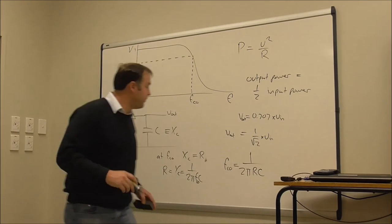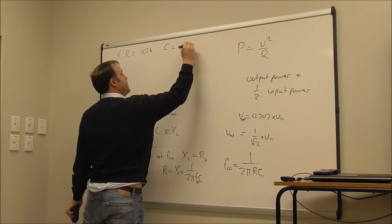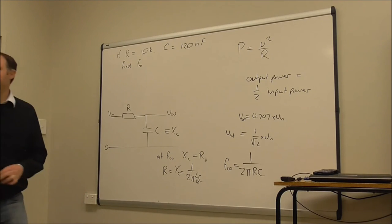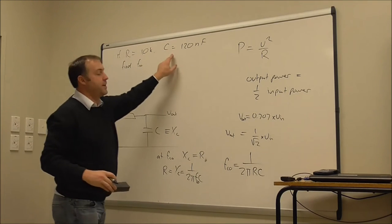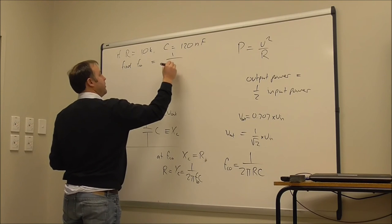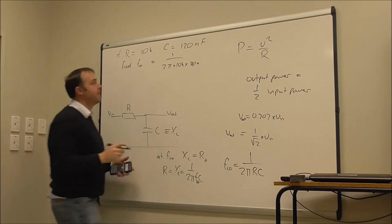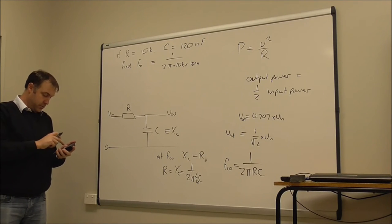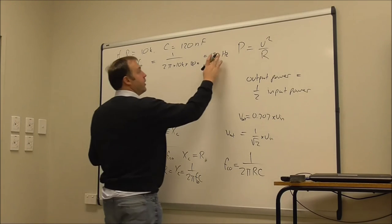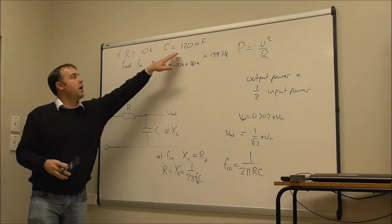Let's do an example. If R equals 10 kΩ and C equals 120 nanofarads, find the cutoff frequency. All I need to do is put in: 1 over 2π times 10k times 120 nanofarads. Putting that into the calculator I get approximately 133 hertz. So if I had a filter made of a 10 kΩ resistor and a 120 nanofarad capacitor, it would have a cutoff frequency of 133 hertz.